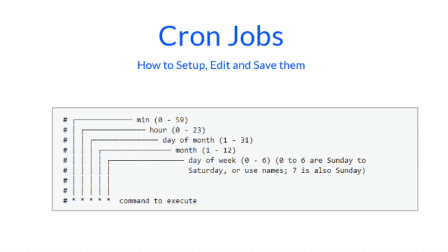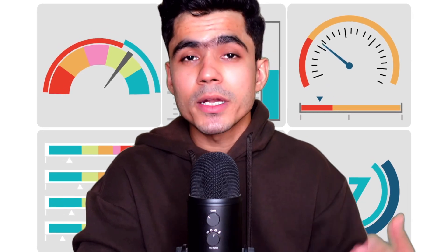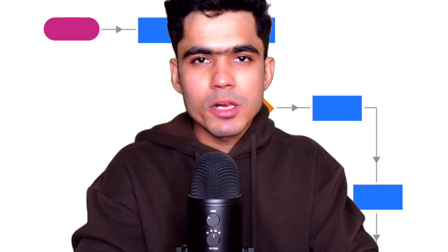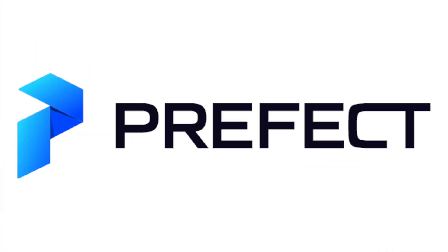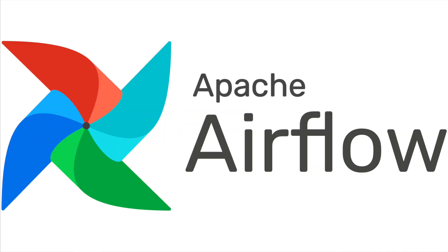A cron job is a Linux command used for scheduling tasks to be executed at some time in the future. But as we move forward, we might have more data sources and multiple scripts, which becomes very difficult to manage with just a cron job. That is the reason we will be using a workflow orchestration tool. We have many different tools available such as Airflow, Mage, Prefect, and many more. In this case, we will go with Apache Airflow.